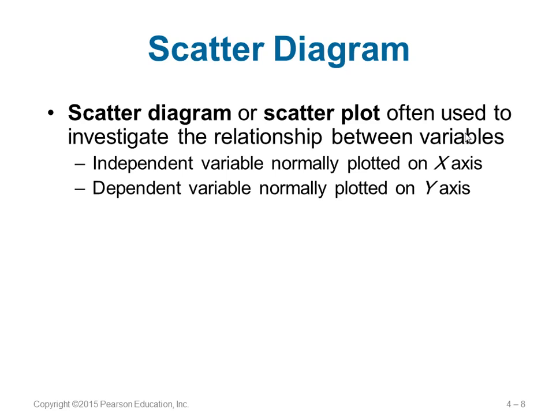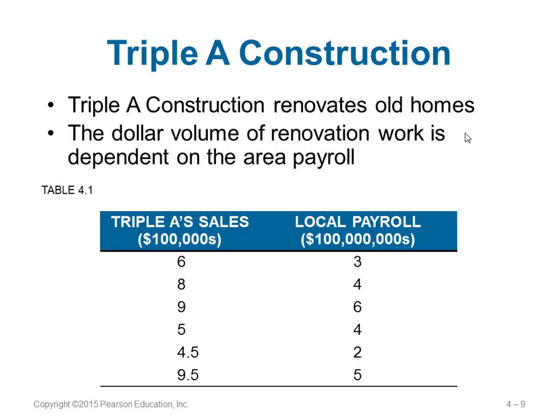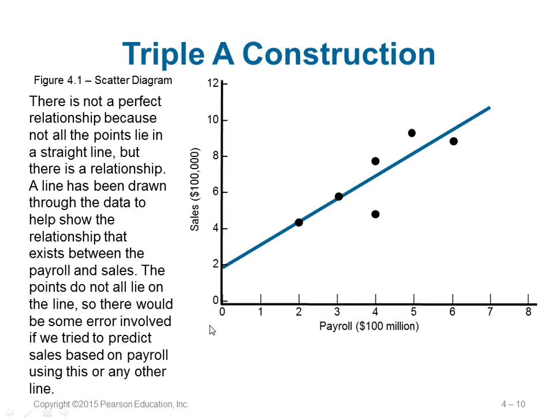A scatter diagram or scatter plot is used to represent the relationship between these variables. In the scatter diagram, the y-axis represents the dependent variable and the x-axis represents the independent variable. For example, consider a company called Triple A Construction that renovates old houses. Their sales depend on the local payroll — if people have good salaries, they renovate better and sales will be high. So sales is on the y-axis and payroll on the x-axis.